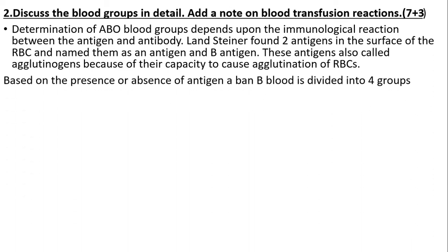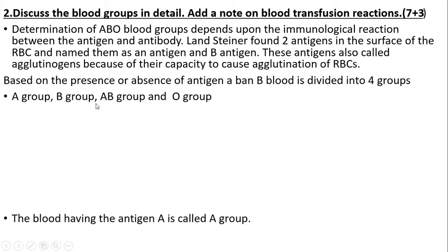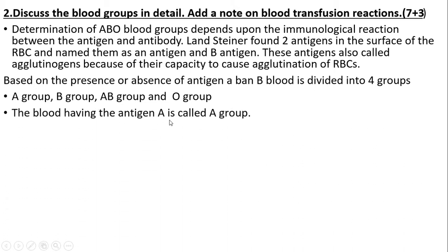Based on the presence or absence of antigen A and antigen B, the blood group is divided into four groups: A group, B group, AB group, and O group. The blood having antigen A is called group A, and this group may have beta antibody in the serum.